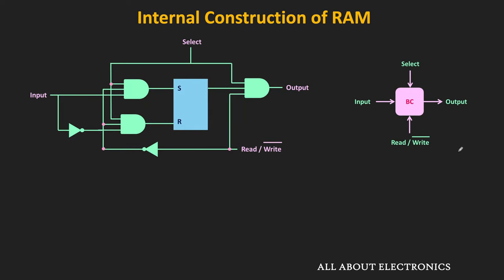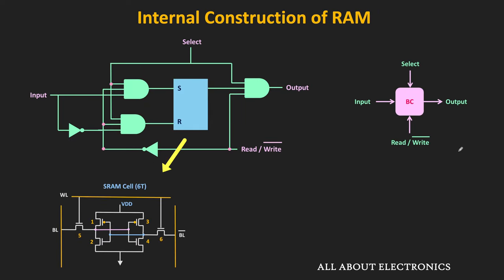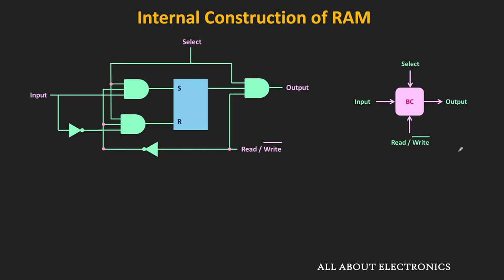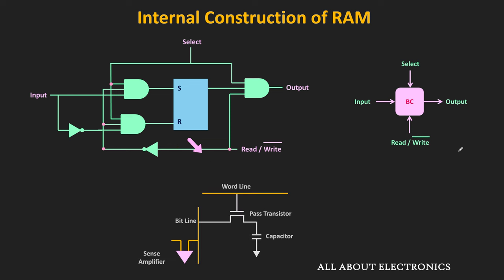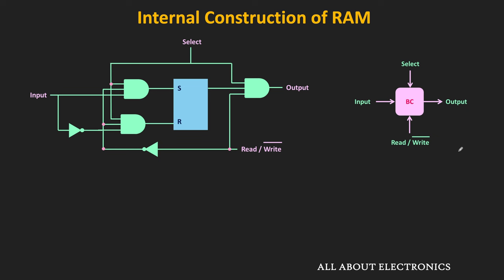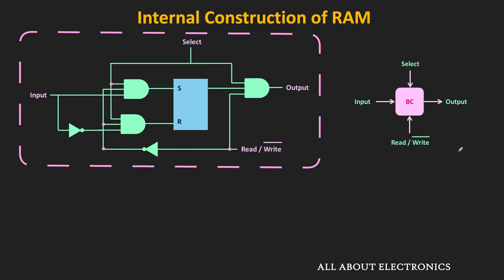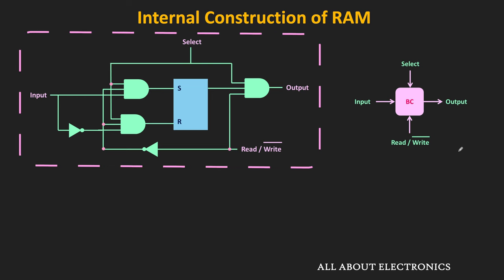In reality, the binary cell is a collection of 4 to 6 transistors which hold 1 bit of information, or more simply it can be a charged capacitor holding 1 bit in the form of charge. Here for simplicity it is modeled using the SR latch, which is a logic circuit of the binary cell to understand its working.